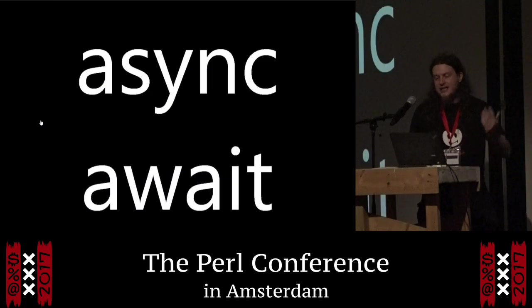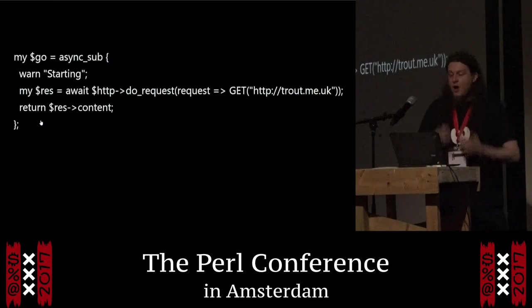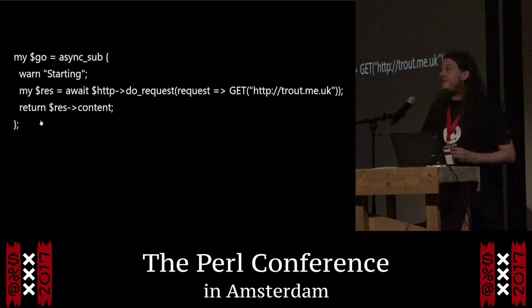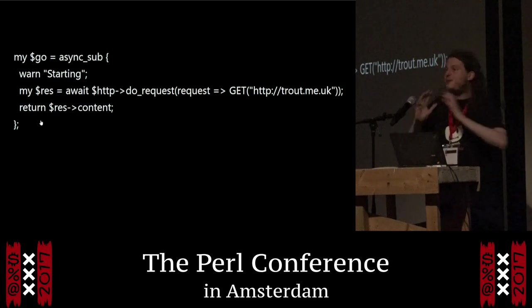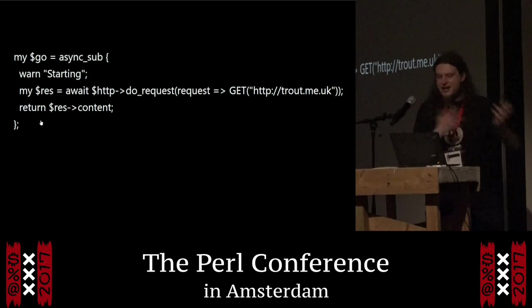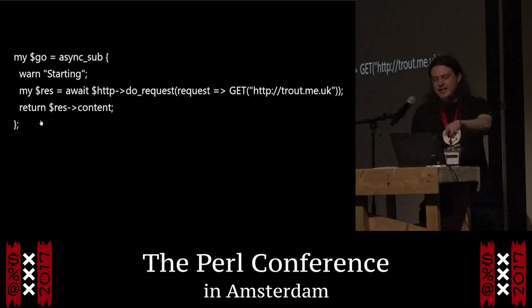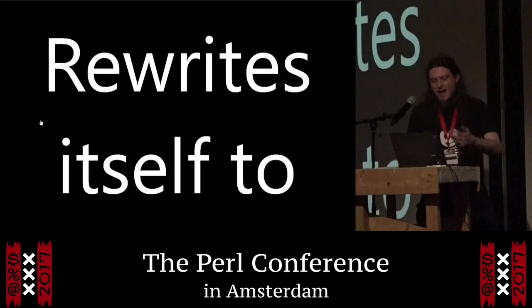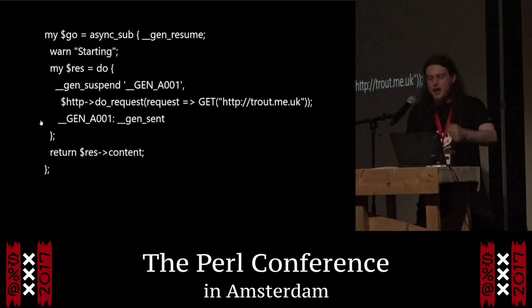That's basically the entire thing for generators — you run that and get the expected output, and it totally works. For async and await, all you're really doing is wrapping some future magic around what we already did. 'async sub' and 'await' rewrites itself to that code.